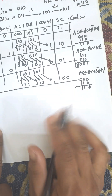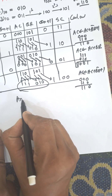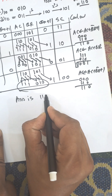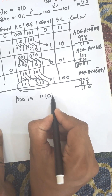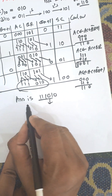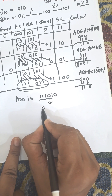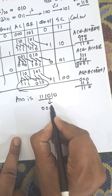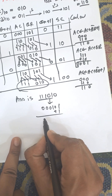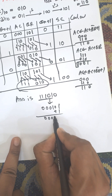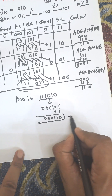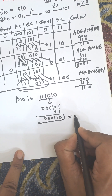The final result is 1 1 0 1 0 1 0. Since one number is negative, we take the 2's complement: the 1's complement is 0 0 0 1 0 1, and adding 1 gives 0 0 0 1 1 0. This binary number is equivalent to minus 6.